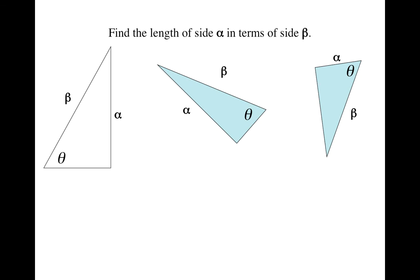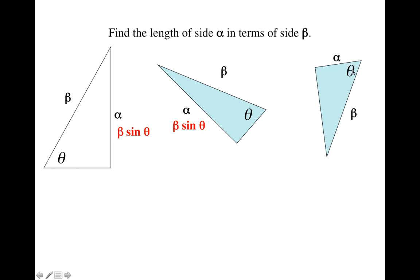Let's do a couple more. Now what you're supposed to do is find this side alpha in terms of the hypotenuse and the angle. Just think about if it's opposite or adjacent and go for it. You notice here alpha is on the opposite side, so pat yourself on the back if you said it's beta sine theta. Notice here alpha is again on the opposite side, so it is again beta sine theta. Now here the side that we're looking for happens to be adjacent — it's right next to it — so that's going to be beta cosine theta to get the shadow that goes down here.